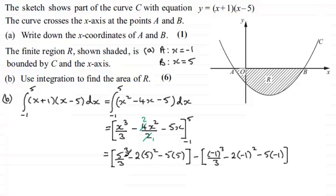So when you work out the first bracket here you should find you get minus 33 and 1 third. And then we have minus here and when you work out the second bracket you should find you get 2 and 2 thirds. And this gives us a negative value minus 36.